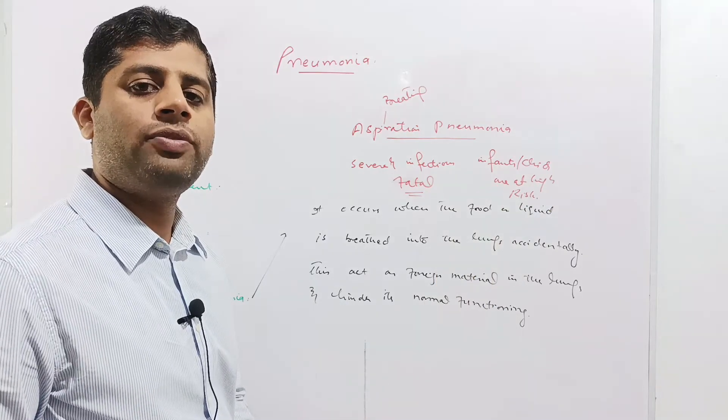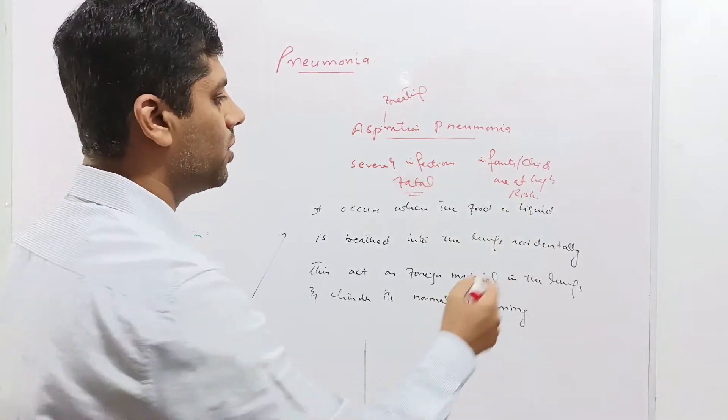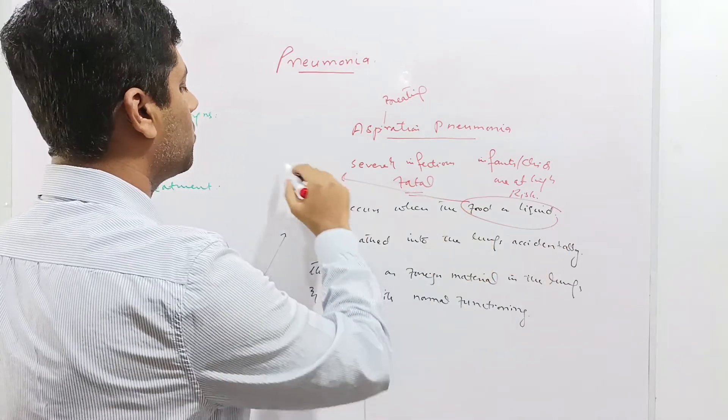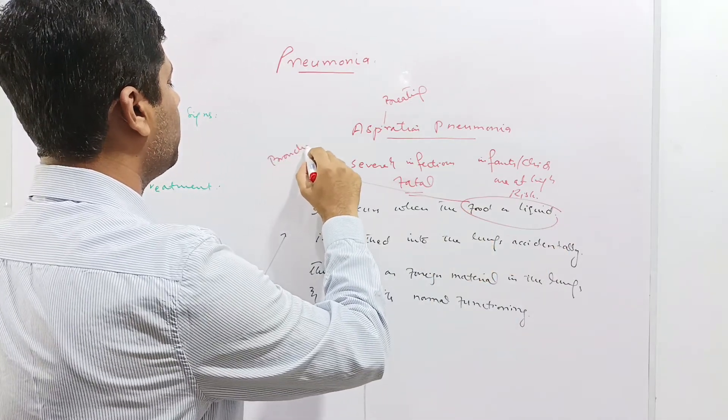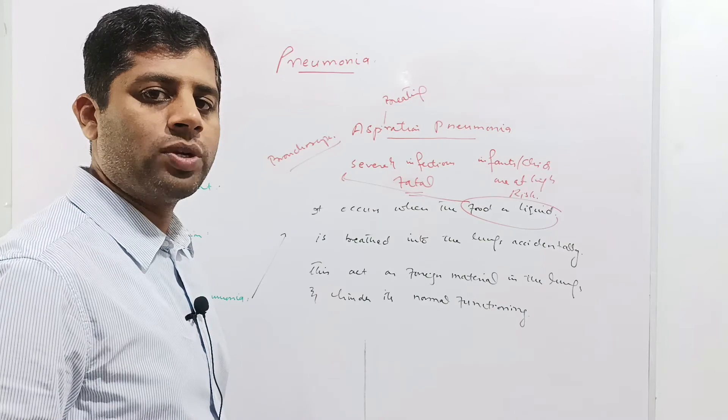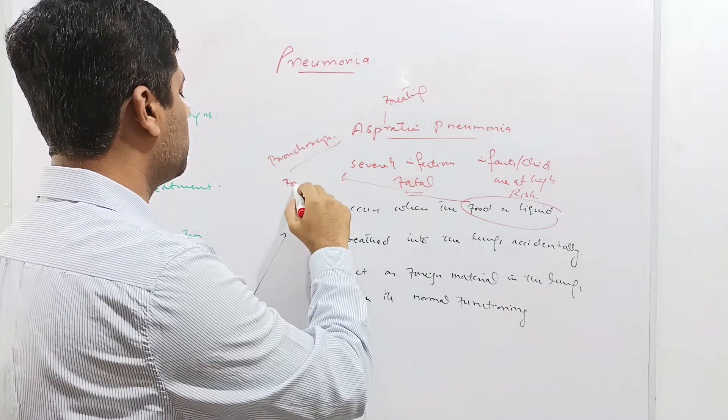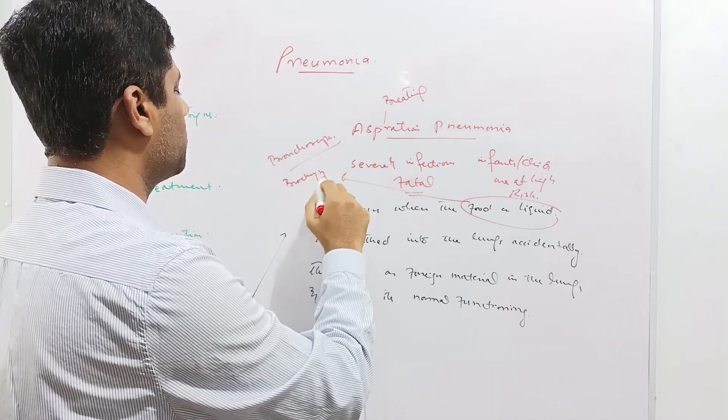The only remedy of aspiration pneumonia is to remove that food or liquid which has passed into the lungs. It is done by bronchoscope, a device through which these particles are removed from the lungs by means of bronchoscopy.